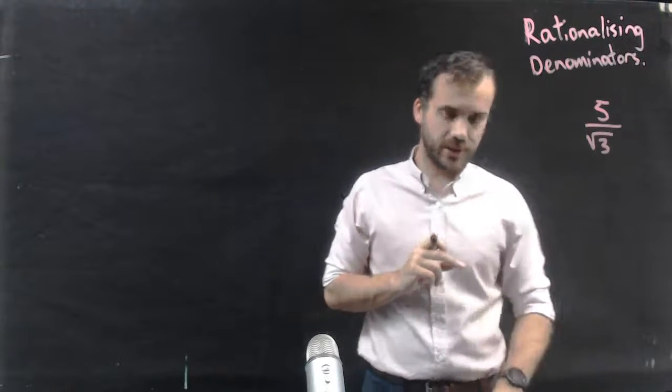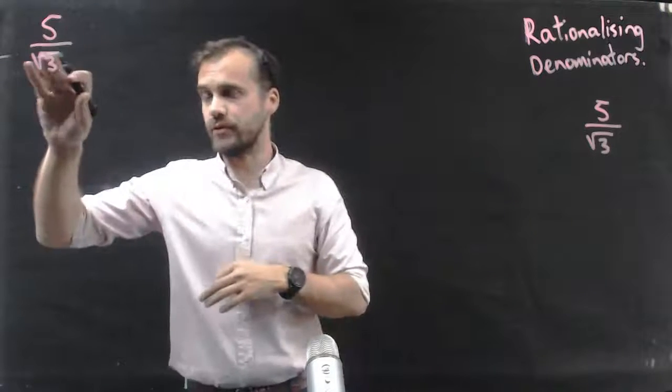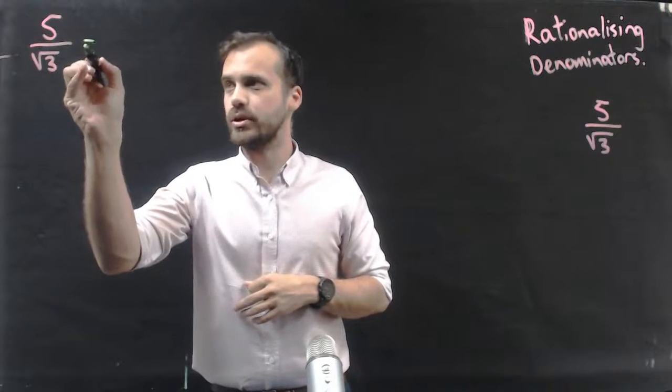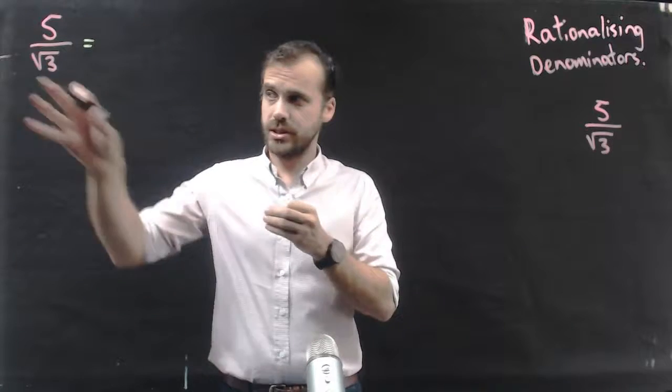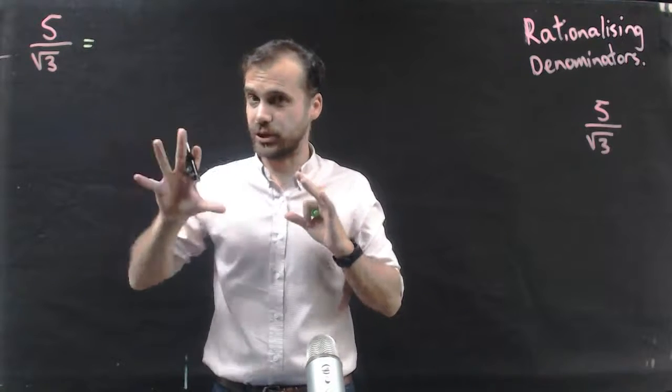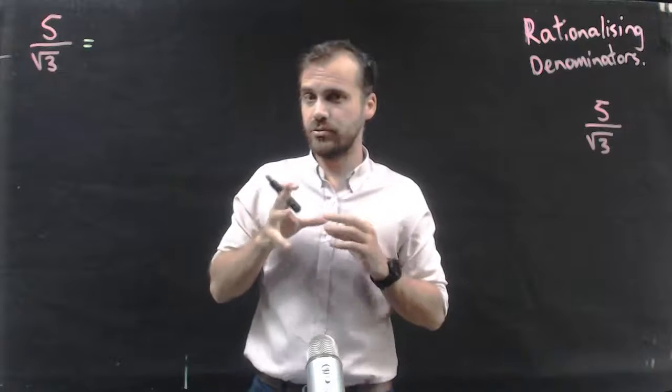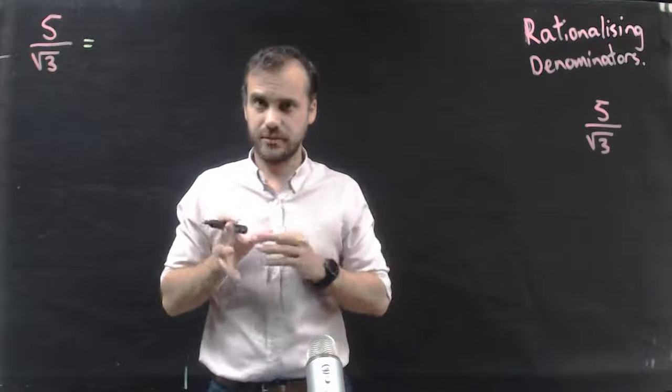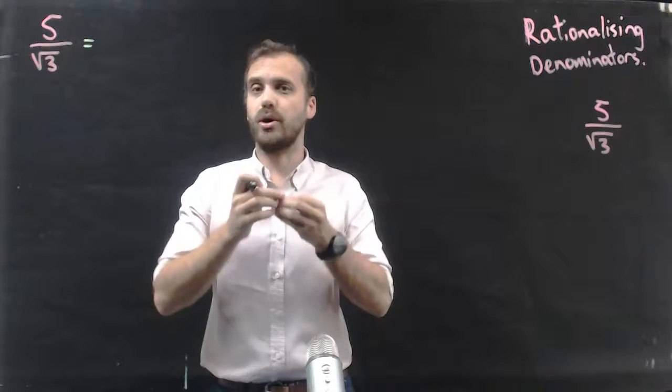All right, let's try one out. I've just brought it over here, 5 on root 3. Now, in order to rationalize the denominator but keep the fraction the same, the only real way to keep a fraction the same but change it is to multiply it by 1.